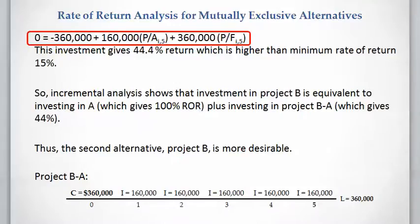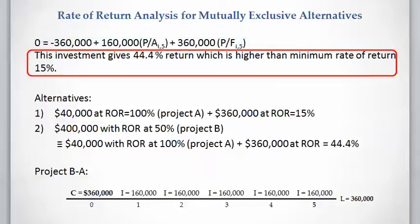We write the rate of return equation for the incremental cash flow: present value of cost equals present value of income plus present value of salvage. The present value of cost is $360,000, which is the difference in investment between project A and project B. The income difference is $160,000 annually, and the salvage difference is $360,000 in year five. Using the Excel IRR function, the incremental cash flow has a rate of return of 44.4%, which is economically satisfactory.